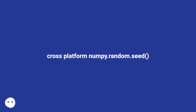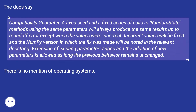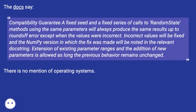Cross-platform numpy.random.seed. The docs say: compatibility guarantee — a fixed seed and a fixed series of calls to random state methods using the same parameters will always produce the same results up to round-off error, except when the values were incorrect. Incorrect values will be fixed and the numpy version in which the fix was made will be noted in the relevant docstring. Extension of existing parameter ranges and the addition of new parameters is allowed as long as the previous behavior remains unchanged.